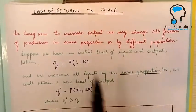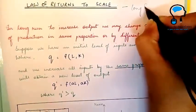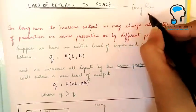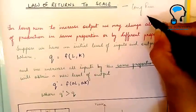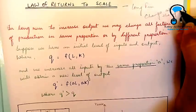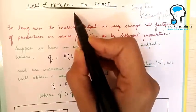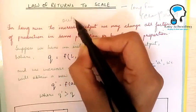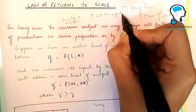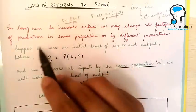In this video we are going to learn about the Law of Returns to Scale. This law operates in the long run, unlike the Law of Variable Proportions which operates in the short run. In the long run we are able to change all the inputs used in the production process. The Law of Returns to Scale explains how output behaves in response to a proportionate change in all the inputs used in the production process.